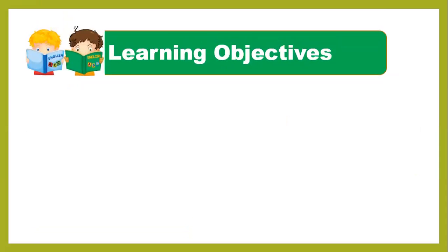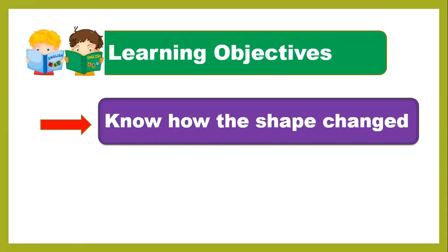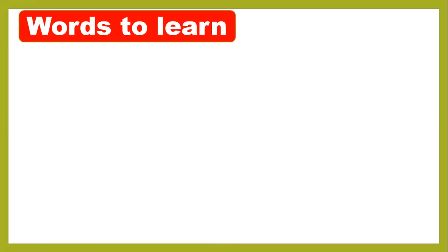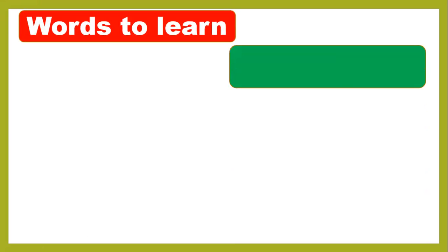In this lesson we learn how shapes change. In unit 2 you learned about different materials — some materials are man-made and some materials are natural. You also learned that some materials are soft and some are hard. Today we learn how the shape changes. Before we start the new lesson, we have four new vocabulary words.